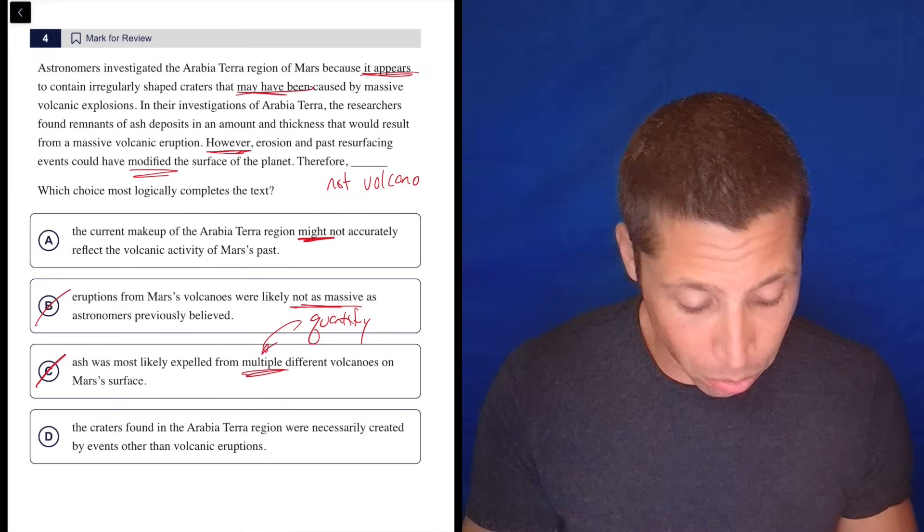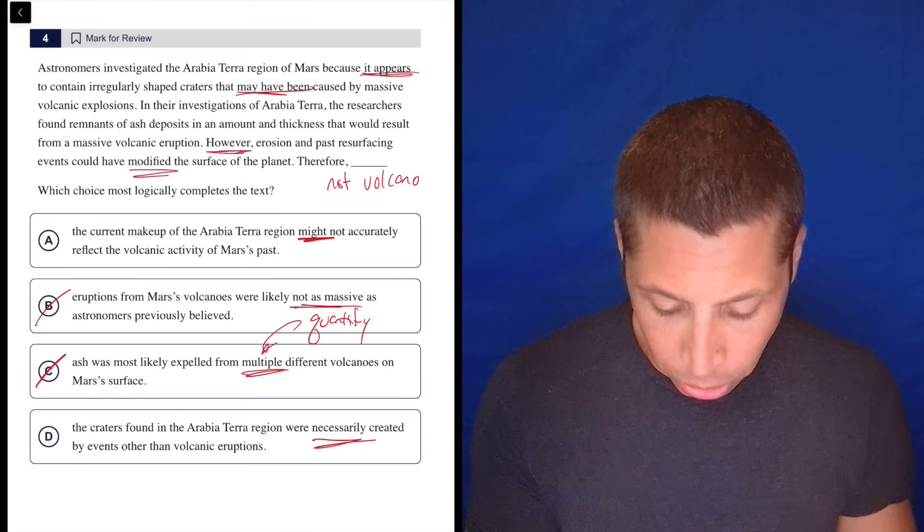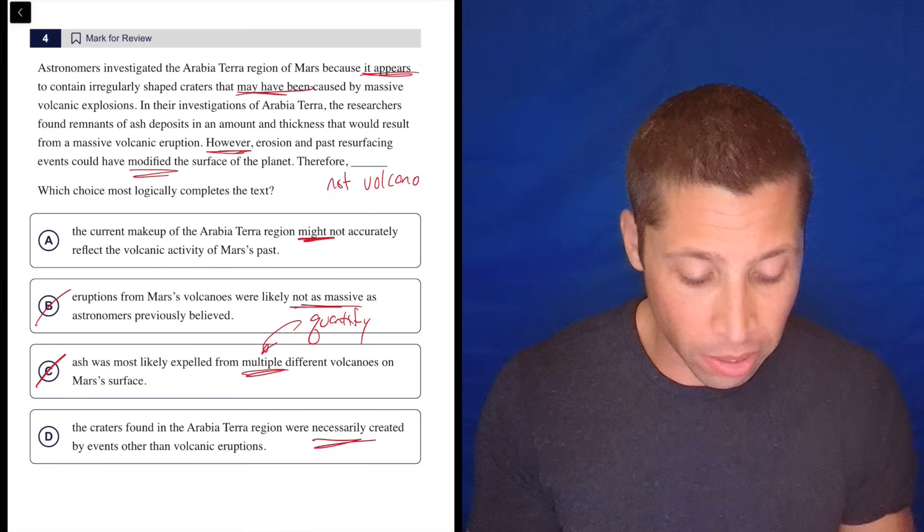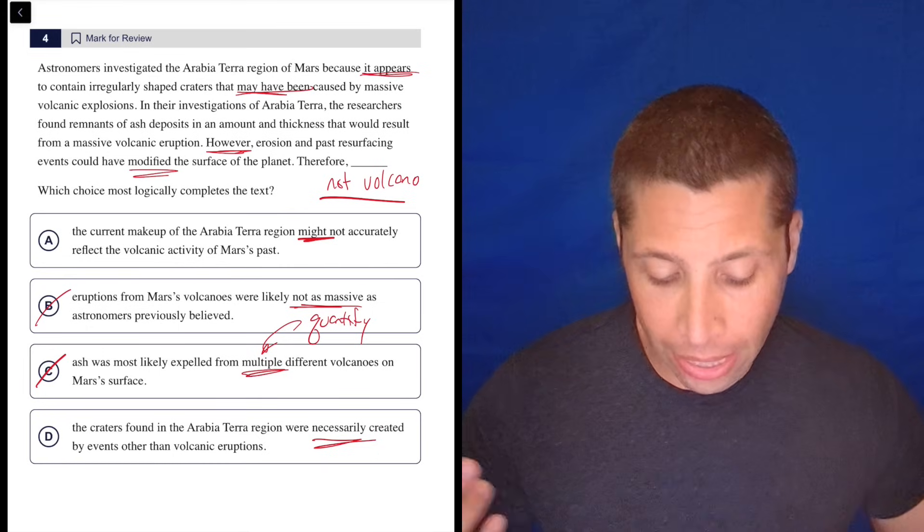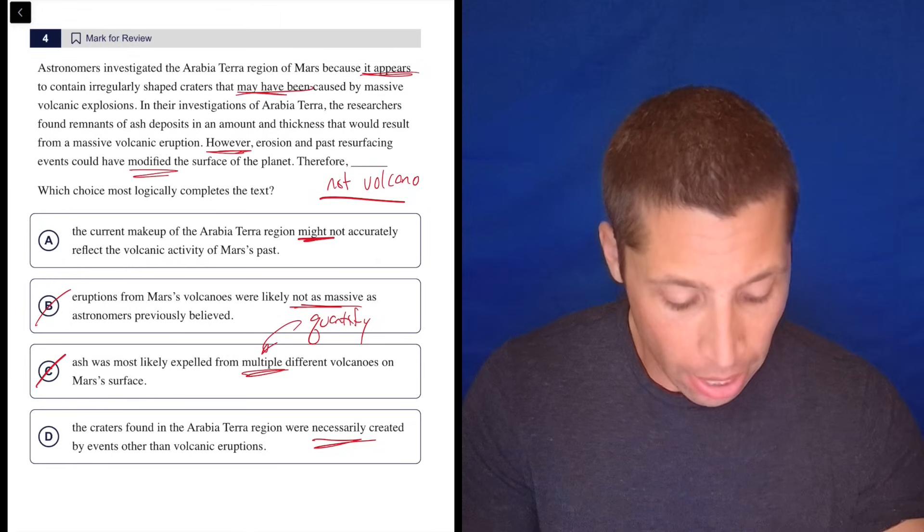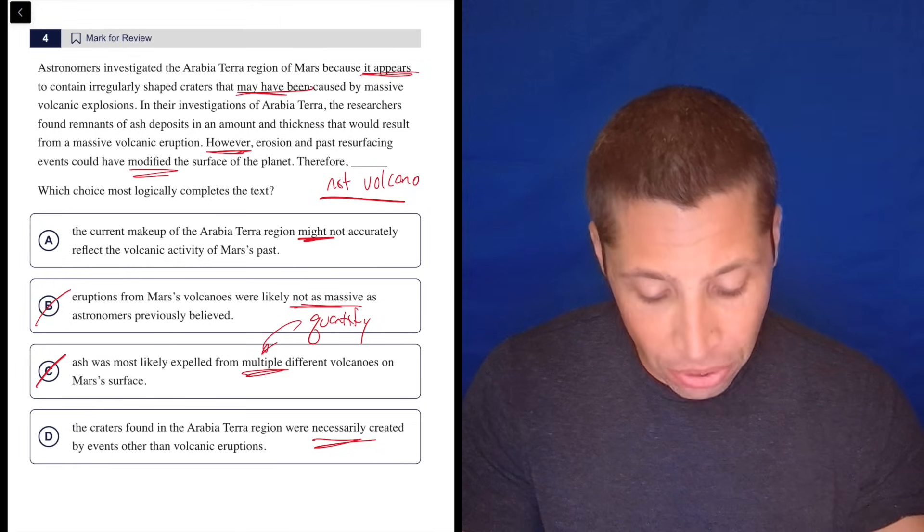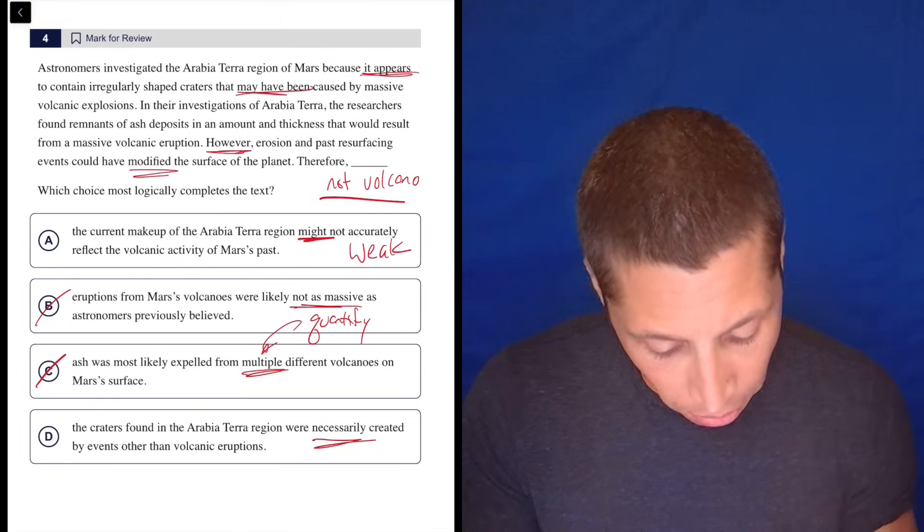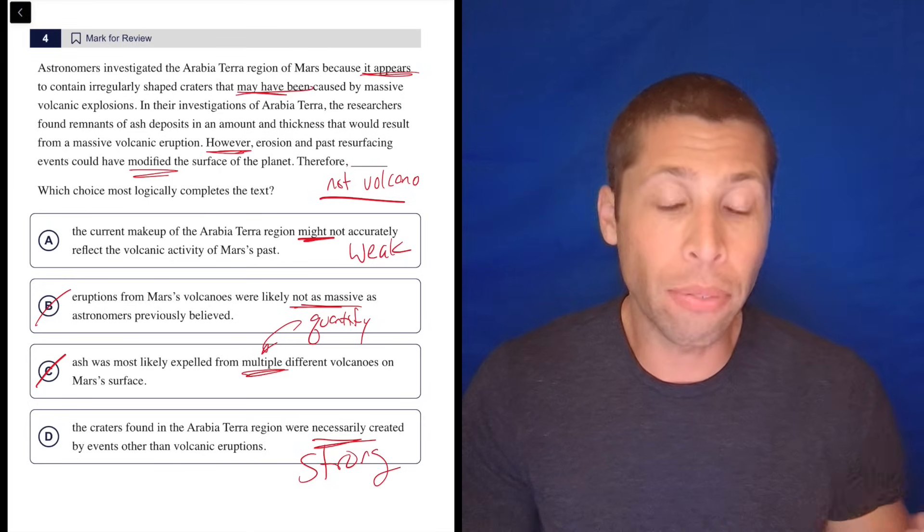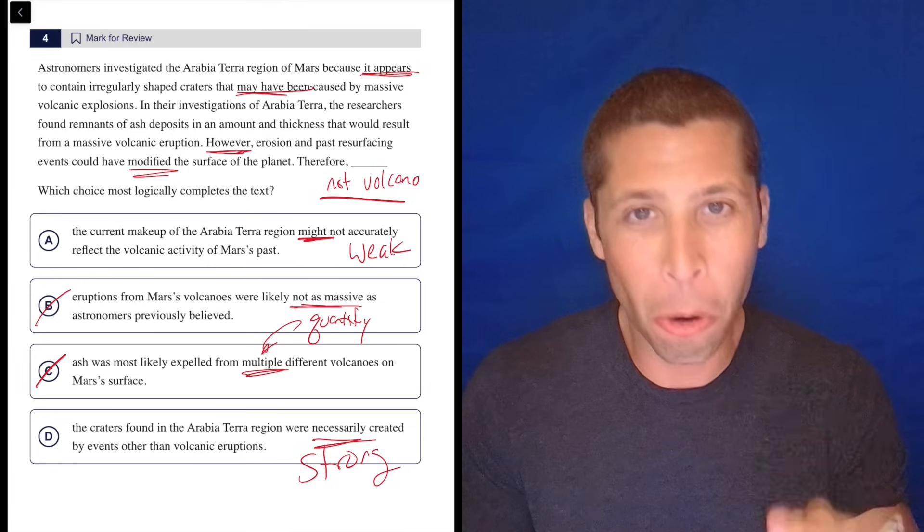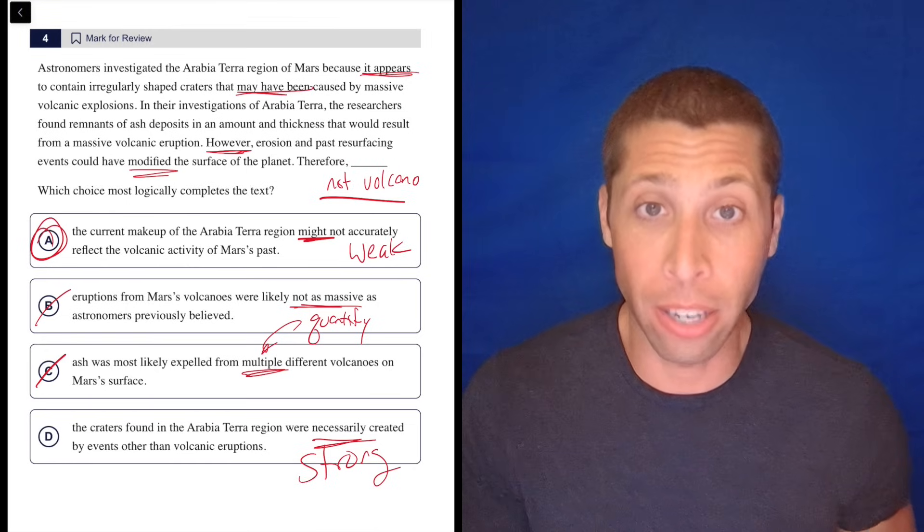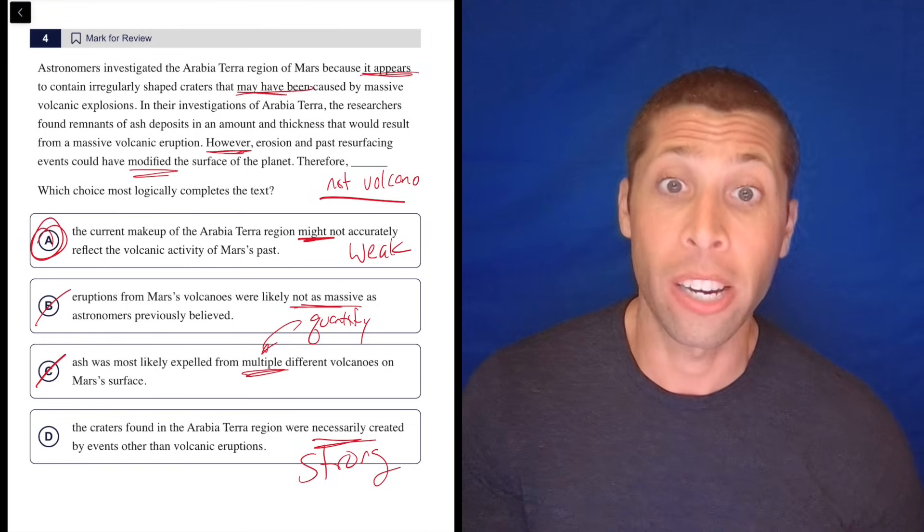D, the craters found in the Arabia Terra region were necessarily – ooh, boy – created by events other than volcanic eruptions. This is a great example too of a filter and a wedge. The filter was that we want something suggesting that maybe this theory that they have is not right. That it's not a volcano. That something wrong with this theory. I would say A and D both say that. But this is a weak answer and this is a very strong answer, right?